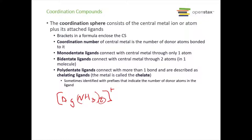A monodentate ligand connects to the central metal through only one atom — 'mono' meaning one tooth, connecting through one atom. A bidentate ligand connects through two atoms in one molecule — two teeth. Polydentate means many teeth, connecting to the central metal with more than one bond. We can also call polydentate ligands chelating ligands, and the resulting complex is called a chelate. Sometimes we use prefixes to indicate the number of donor atoms in the ligand.